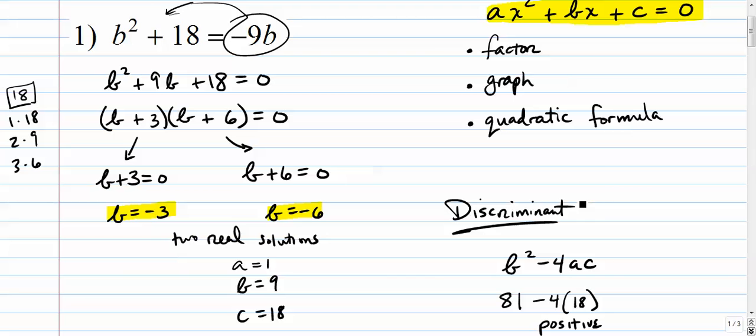Remember your rules. If the discriminant is positive, you had two reals. If the discriminant is negative, you had two complex. If the discriminant is 0, you had one real solution. That kind of repeats itself as a multiplicity.